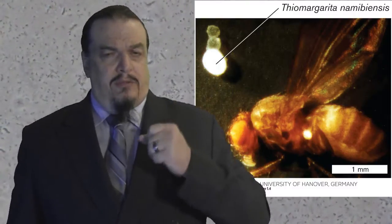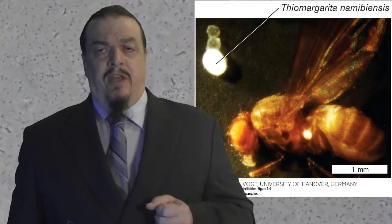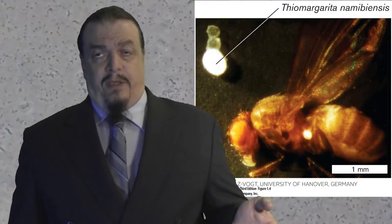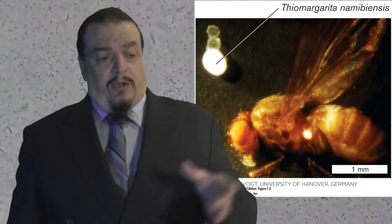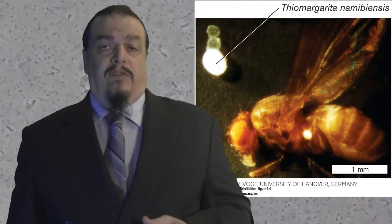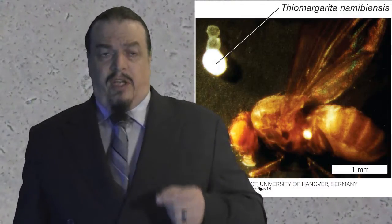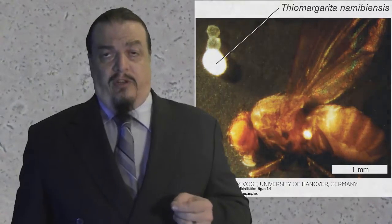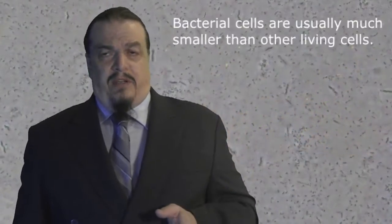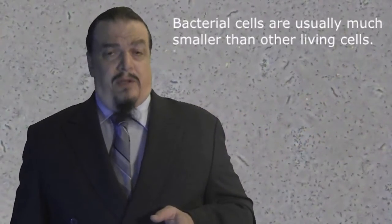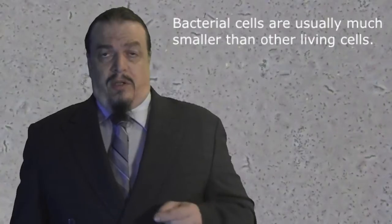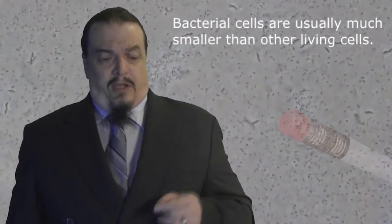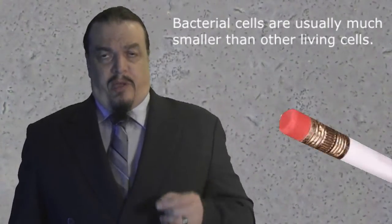The largest single-cell bacteria that can be seen with the naked eye is called Thiomargarita namibiensis. It gets its name from the country of Namibia, and it grows in the ocean off the continental shelf of Africa. The largest it grows is three quarters of a millimeter. Most cells range from three to five micrometers in length — so small that a line of a thousand of them could fit across a pencil eraser.